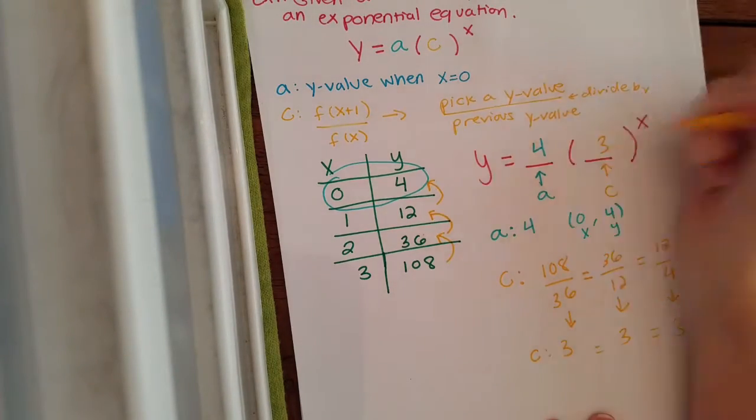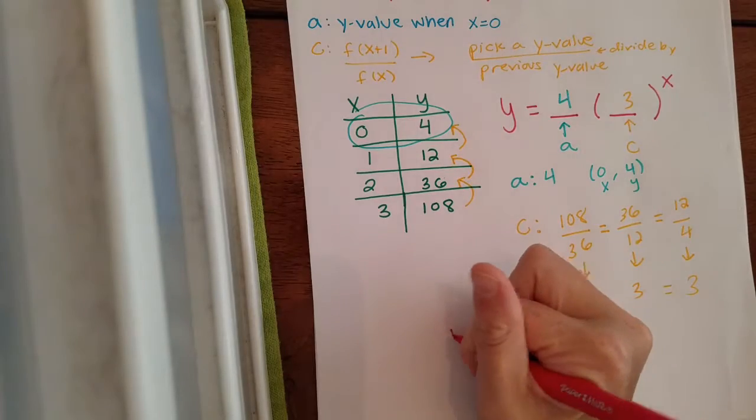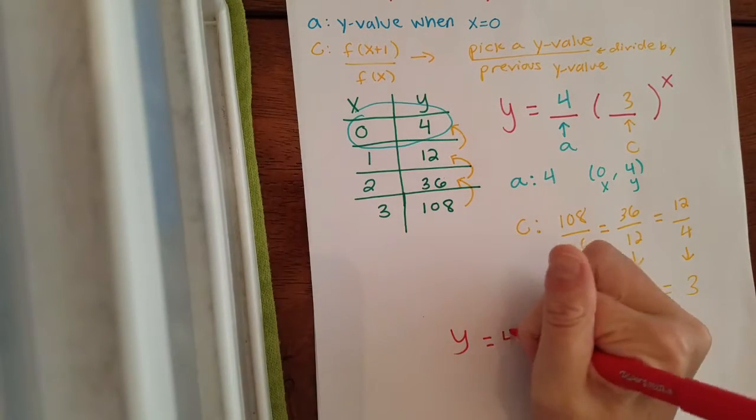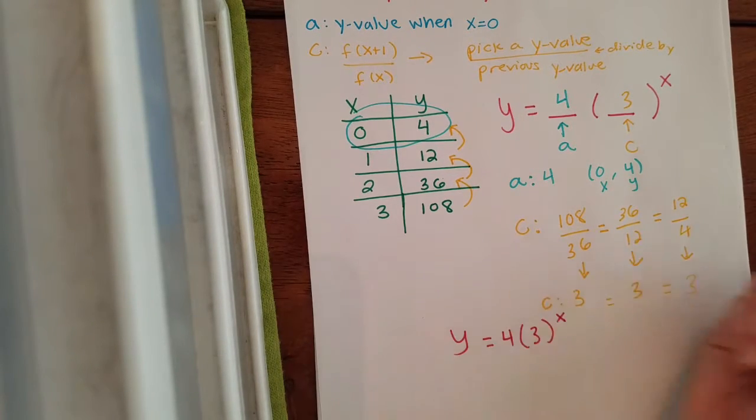So our c value is going to be 3. And that's all you have to do to build your exponential equation. So your final answer would be y equals your a value, which in this case was a 4, parenthesis our c value, which is a 3, raised to the x.